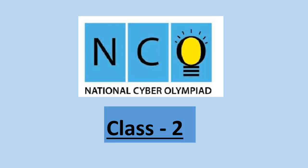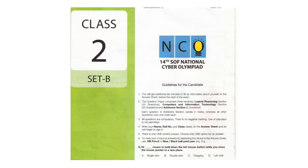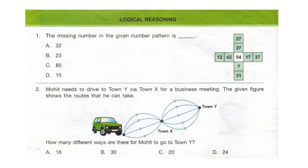Welcome to our channel Olympiad Trainer. In this video we are going to see previous year question paper of NCO, that is National Cyber Olympiad exam for class 2. The question paper comprises three sections: logical reasoning, computers and information technology, and achievers section. Each question in the achievers section carries two marks whereas all other questions carry one mark each. Let's start with the first section, logical reasoning.